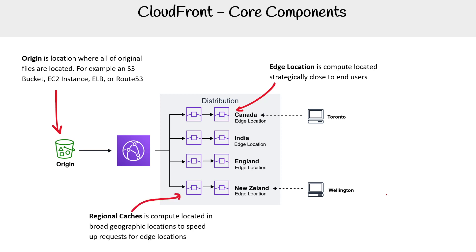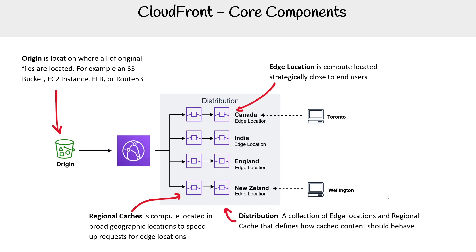There are regional caches — these are intermediate caches in between AWS and the edge location, to optimize the cache for geographically broad locations. Then you have your distribution, the big gray box, which is a collection of edge locations and regional caches that define how cached content should behave.